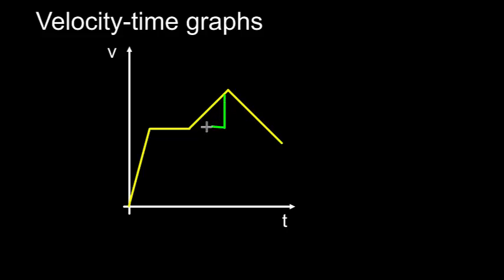Once again, we find the gradient by drawing a triangle along the line, dividing the change in velocity by the change in time.